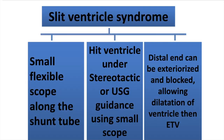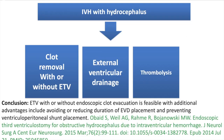ETV can also be used in slit ventricle syndrome, though it is difficult to hit the ventricle. In such cases, a small flexible scope can be used along with the shunt tube, or the ventricle can be hit under stereotactic or USG guidance. The distal end of the shunt can also be exteriorized and blocked to allow the ventricle to dilate, and then ETV can be performed. In hydrocephalus associated with IVH, ETV can be done with or without removal of the clot.